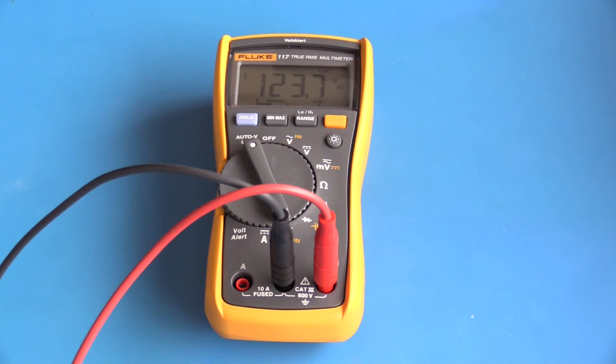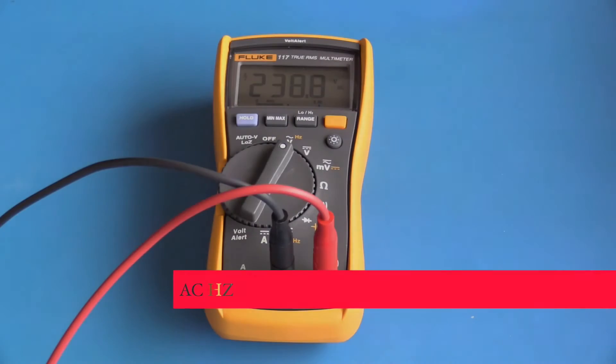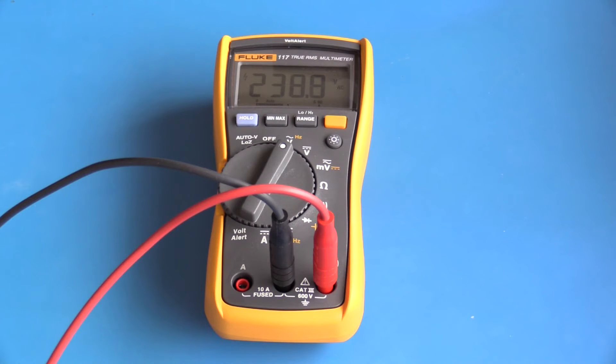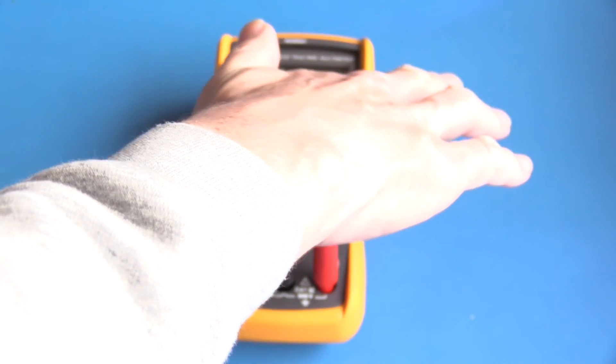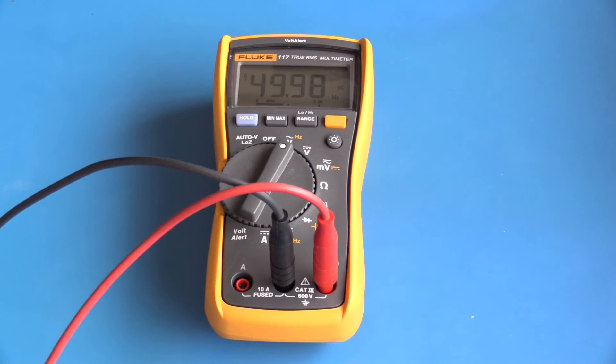The auto volt function on the Fluke 117 is low impedance. Here I can see approximately 17 volts AC. If I move the selector to the auto volt function, that is an example of the ghost voltage caused by the line running very close to a live conductor. When measuring AC voltage, the Fluke 117 can also display frequency. Having pressed the alternate function button, I'm displaying approximately 50 Hertz which is what I would expect.